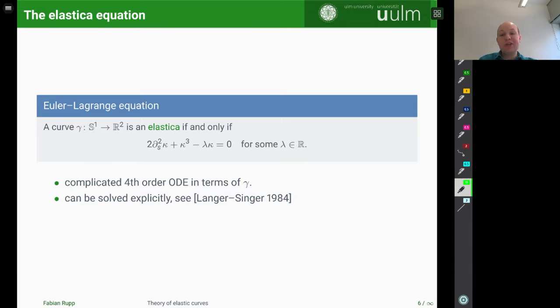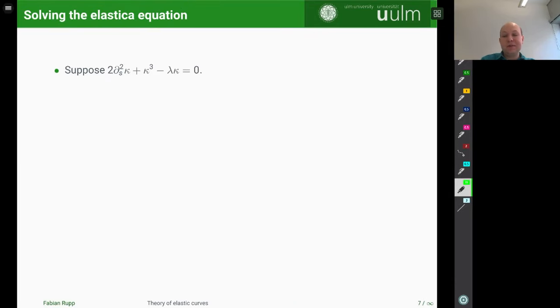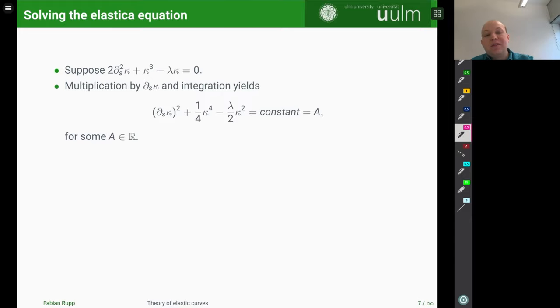So fortunately, this equation can be solved explicitly. I think this was first done by Saalschütz, but today we will discuss a more recent approach by Langer and Singer. And yes, so how can we solve this equation or why can we explicitly solve it? It's not clear a priori. So what's the idea? We assume that we have a solution and now what we do is we test this equation with d_s κ. So here we multiply with d_s κ and then we integrate.